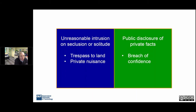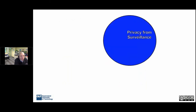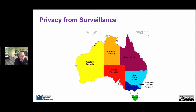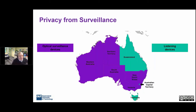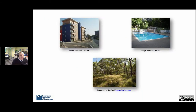So trespass to land, private nuisance, and breach of confidence are the actions that someone may have available to them. When it comes to privacy from surveillance, there are eight jurisdictions in Australia. Five of those — Northern Territory, Western Australia, South Australia, New South Wales, and Victoria — have now passed laws governing optical surveillance devices that would cover cameras mounted on drones. Whereas the other three — Queensland, ACT, and Tasmania — really haven't stepped into the 21st century and still have laws that only apply to audio devices. So flying a drone in any of those three jurisdictions is not going to be caught by the surveillance laws. And even among the other five, the laws are unfortunately not uniform — I've got some examples to illustrate the differences.